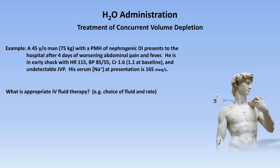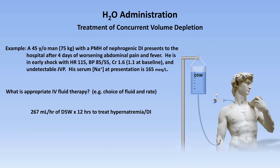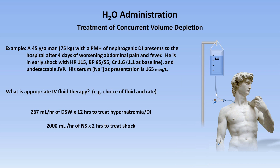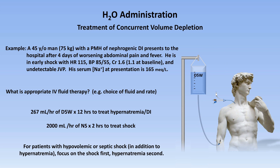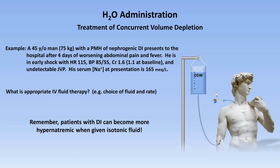So what should we do? On one hand, we have the option of 267 mL of D5W as a continuous infusion; on the other, approximately 2,000 mL per hour of normal saline given as boluses. For patients with hypovolemic or septic shock and concurrent hypernatremia, focus on the shock first with normal saline, and once the volume is improved in a few hours, address the hypernatremia second. The risk of harm from hypovolemia is much greater than the risk of a few extra hours of hypernatremia. Remember that patients with DI can become more hypernatremic when given isotonic fluid.